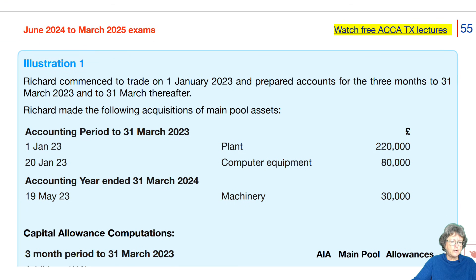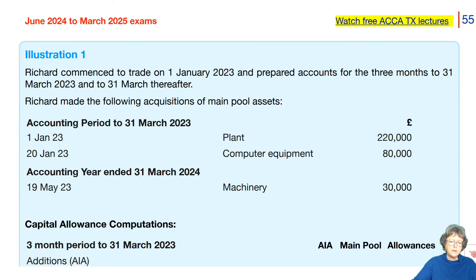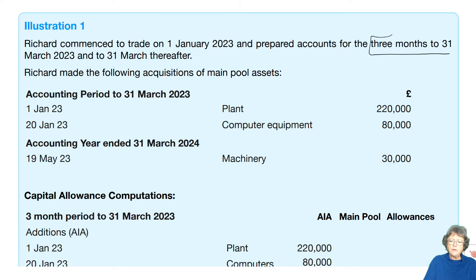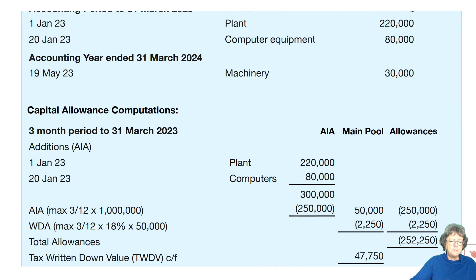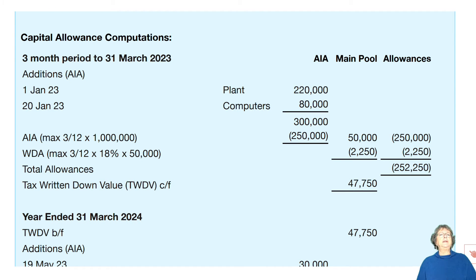Let's have a look at an illustration which shows us what we need to do. Richard commenced trade on the 1st of January 2023, prepared accounts for three months to the 31st of March 2023, and then 31st of March thereafter. Richard made the following acquisitions of main pool assets. In that three-month period he bought, on the 1st of January, some plant for £220,000, and then later in the month some computer equipment. And then in the accounting year ended 31st of March 2024, in May he bought some machinery for £30,000. It's very important that you get the layout of the pro forma right — you will have to do one of these in an exam.